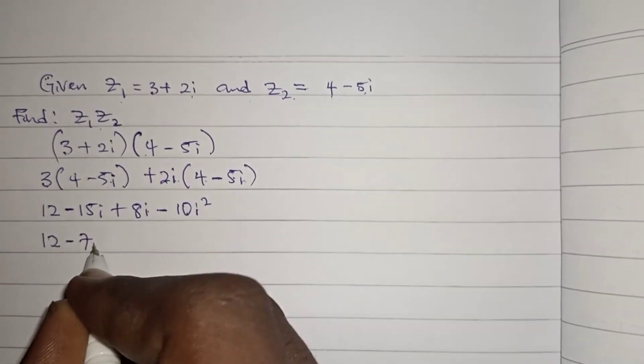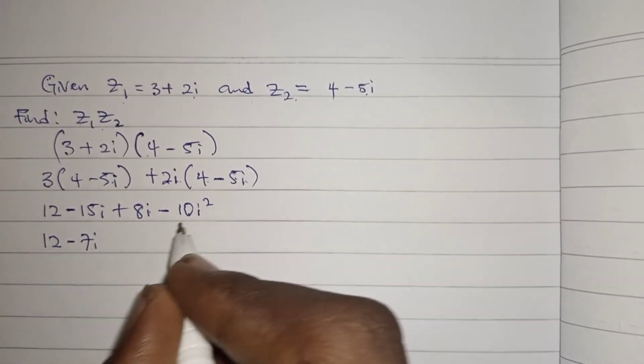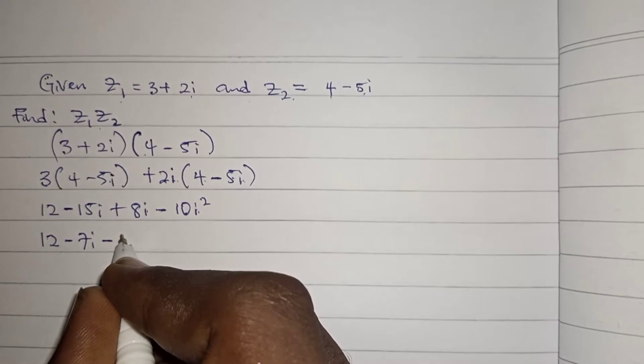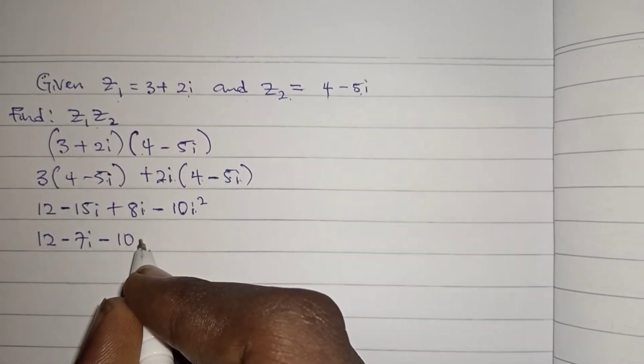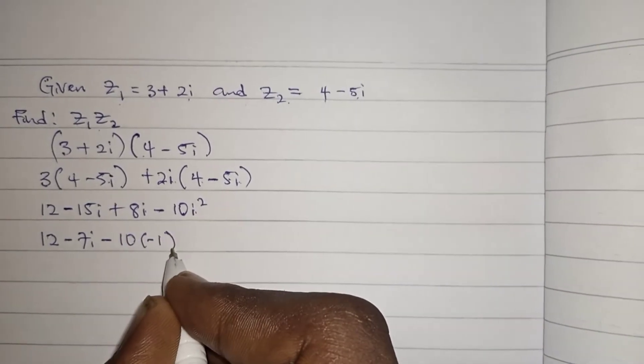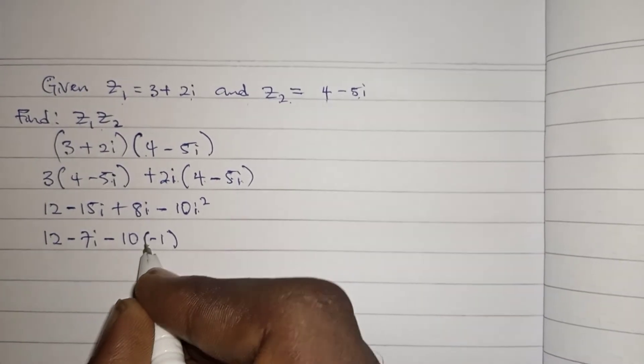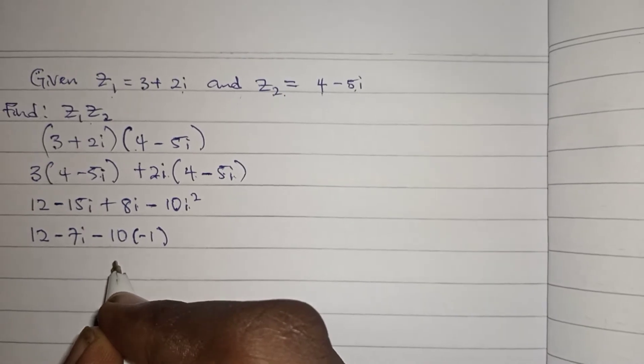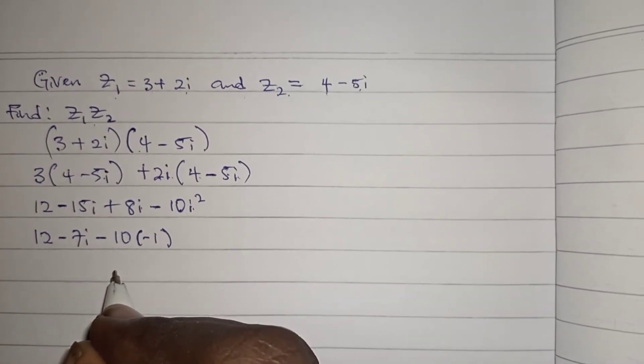We have 12 minus 7i, so now we are left with minus 10i squared. Remember our i squared is equal to minus 1. From the videos we've done earlier, I told you how to get i squared, i cubed and the rest. You can go watch that, the link is in the description.